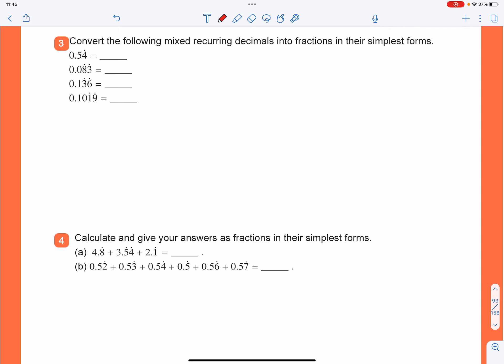Since they are all mixed recurring decimals, we can use that method. You have to get some 9s and some 0s in the denominator. For the first one, as for the recurring part, you have only one digit, which is 4, so you have 1 of 9. And that 5 is non-recurring digit after the decimal point, so you have 1 of 0.